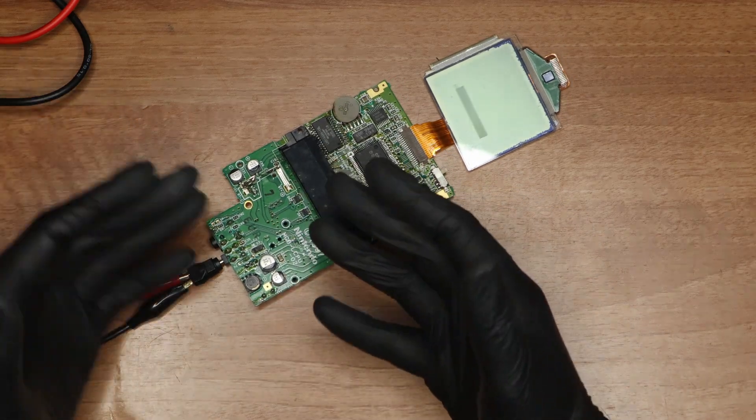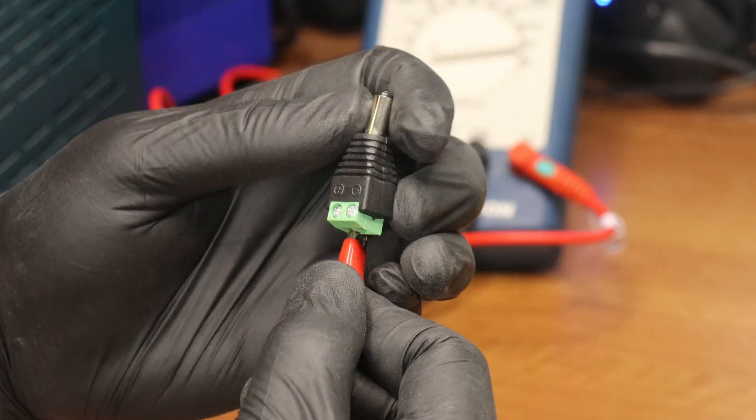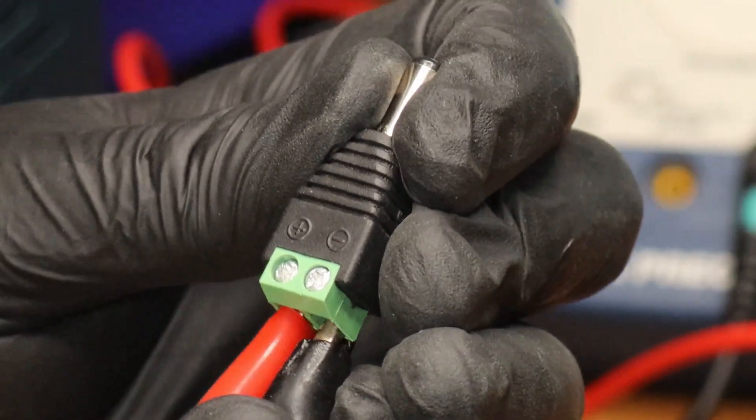Nonetheless, the Game Boy still powers on. Another method involves using a screw terminal 2.1mm x 5.5mm barrel plug, where you can loosen the terminals and insert the crocodile clips.